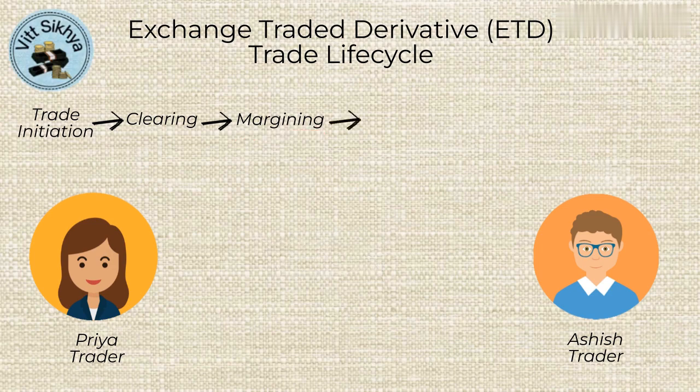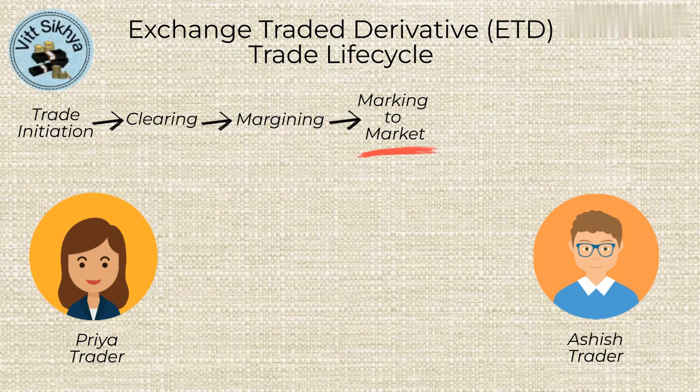As the value of the underlying asset changes, the value of the derivative contract also changes. This process is called marking to market. The exchange will adjust the margin requirements based on the current value of the contract to ensure that both parties have sufficient collateral to cover their obligations. The value of the derivative is marked to market at the end of each trading day. If the value of the position has increased, the trader receives a profit; if it has decreased, the trader may receive a margin call.